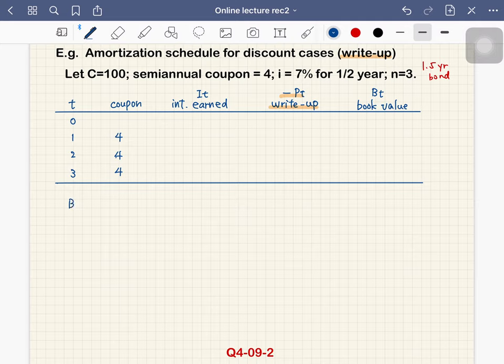So B0 is equal to CG. So this is 4 times a-angle-3 at 7%, 3 period at 7% each, plus redemption value 100 times V to the power 3. So that is 1.03 to the power negative 3. So this is by price formula again.